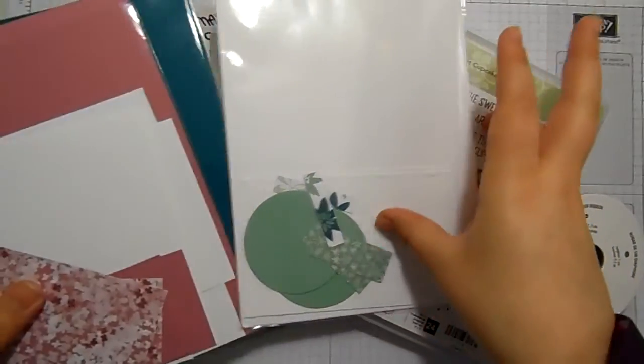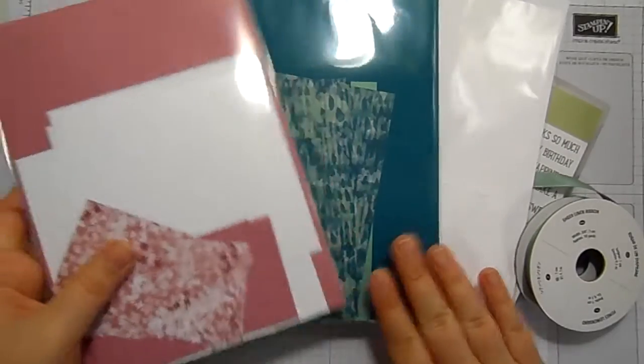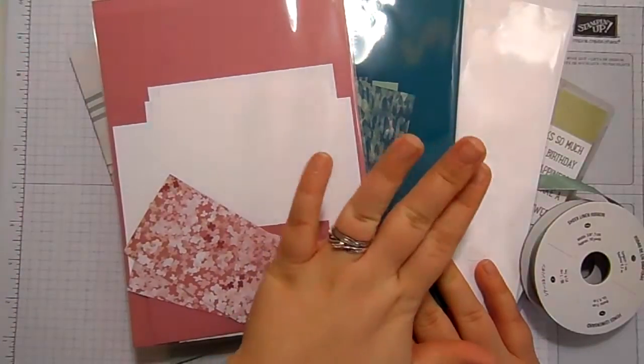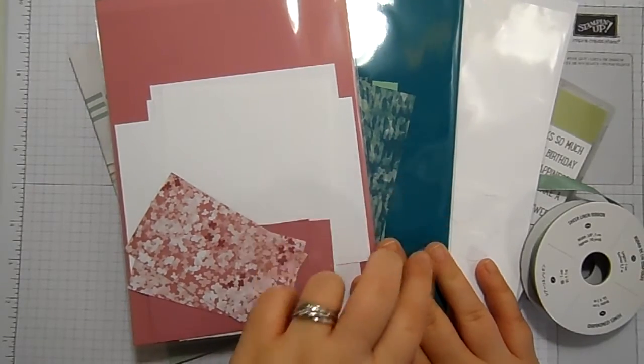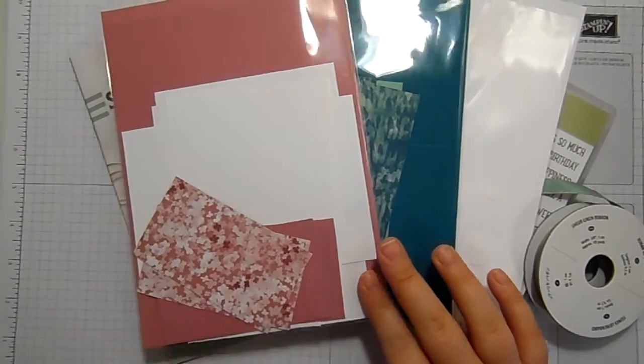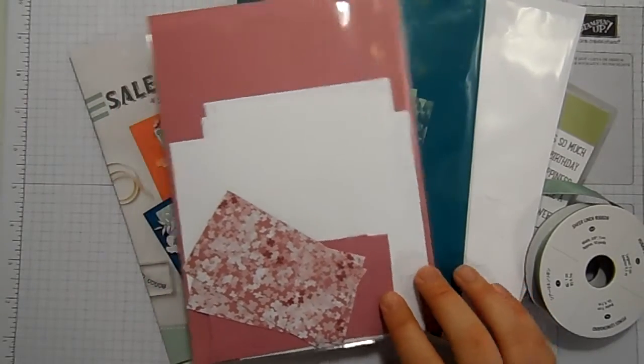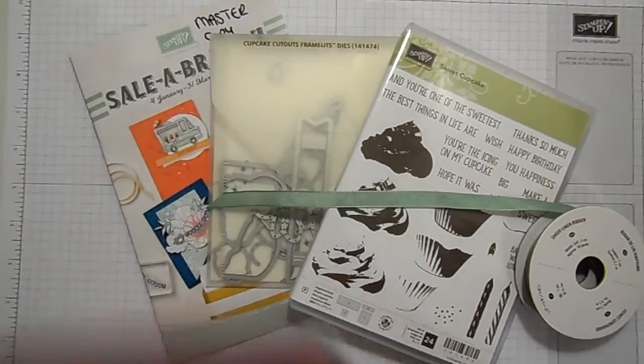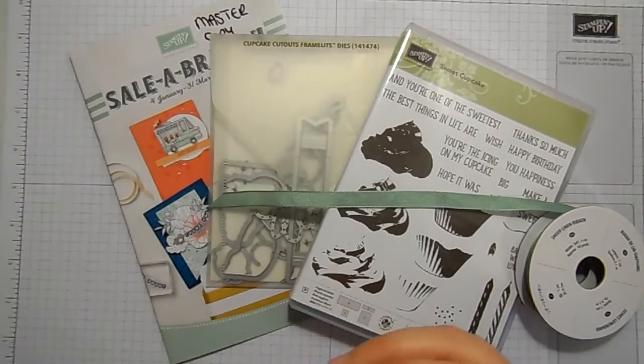This time we have one with a Whisper White card base, one with Island Indigo and one with Sweet Sugar Plum. There would be three inks I would recommend for this class: Island Indigo, Sweet Sugar Plum and Mint Macaron. If you don't have them and you want to add them onto your class order, that's absolutely fine. Just let me know when you sign up for class.